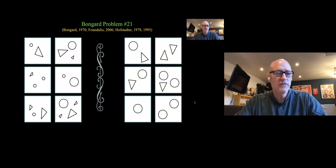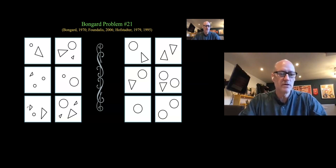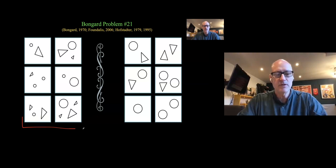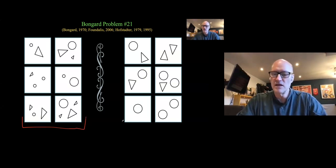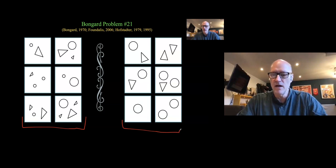The task in a Bongard problem: there are six entities on the left side and six entities on the right side, and your task is to find a rule which will separate the items that belong in the left and right side.